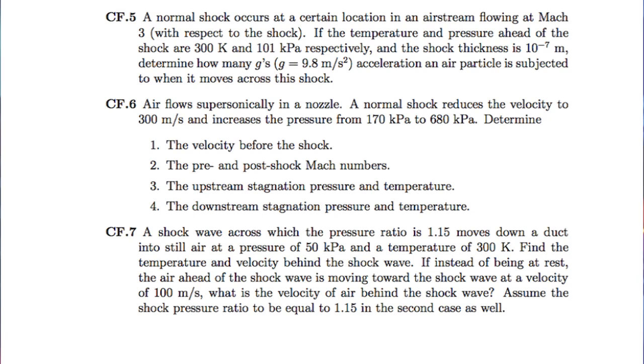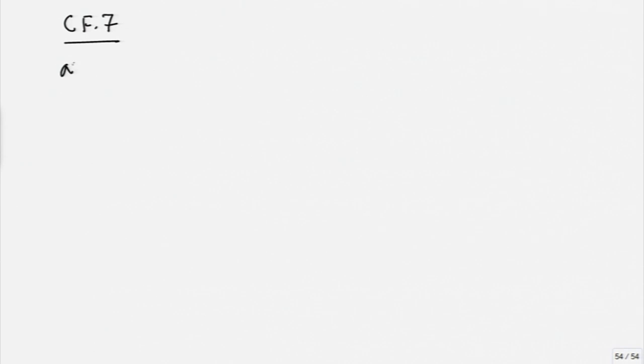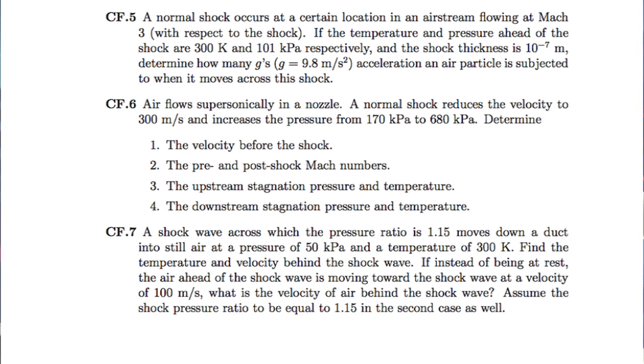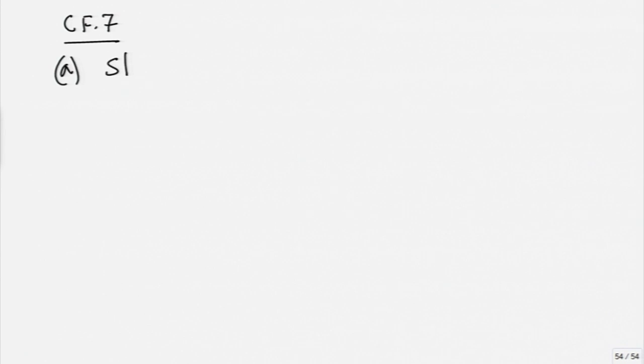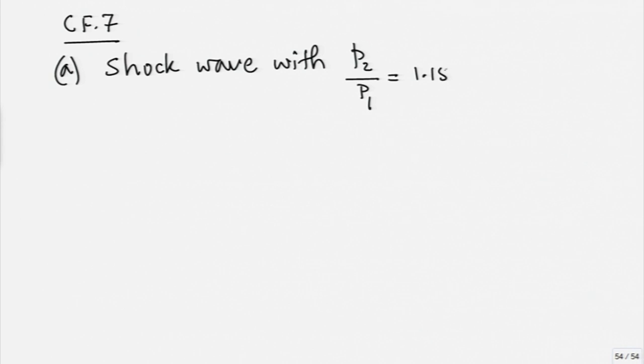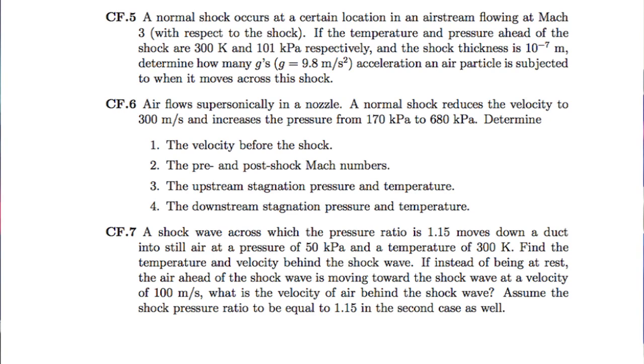This was the first problem. I mentioned in the lecture that you can solve up to problem CF0.7 with the material covered today, so let me go directly to CF0.7. There are two parts to this problem. Here we are dealing with a shock wave across which the pressure ratio P2 over P1 is 1.15. It moves down the duct into still air which is at a pressure of 50 kilo Pascal and 300 Kelvin.